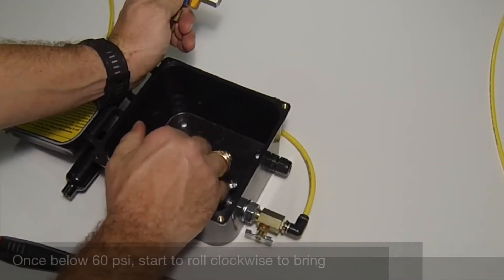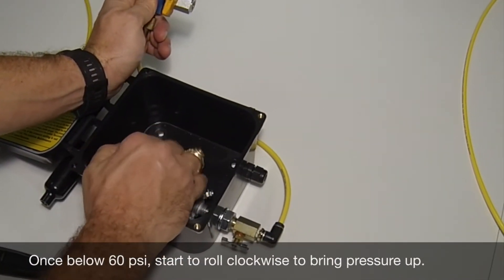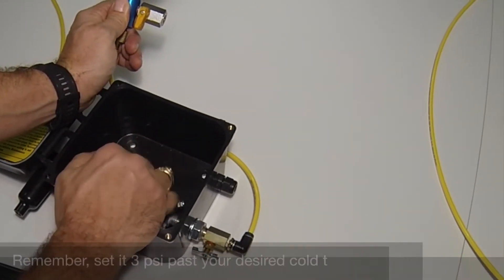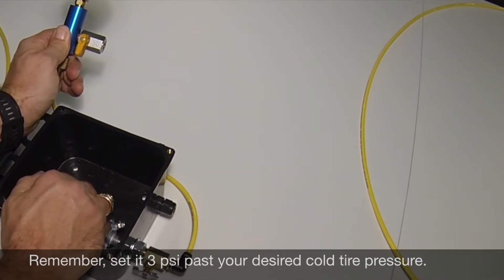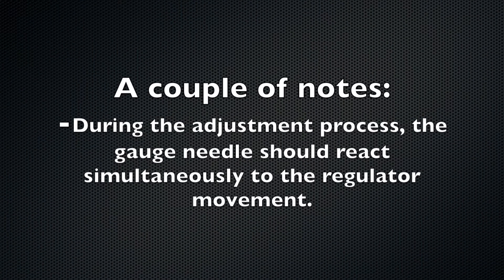Once the gauge reads below 60 psi, go ahead and increase the pressure by turning the regulator knob clockwise until the gauge reads 3 psi above your desired cold tire pressure setting.